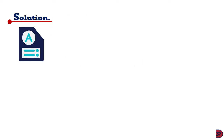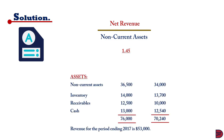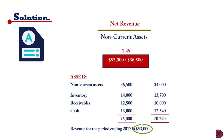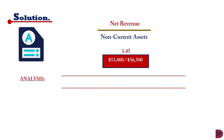For the solution, restating the formula: net revenue divided by non-current assets. The ratio will be 1.45, achieved by dividing the revenue of 53,000 by the non-current assets only — not the total — of 36,500. This means the asset was used to generate revenue greater than its own value, even though it fell slightly short of the desirable 1.5.